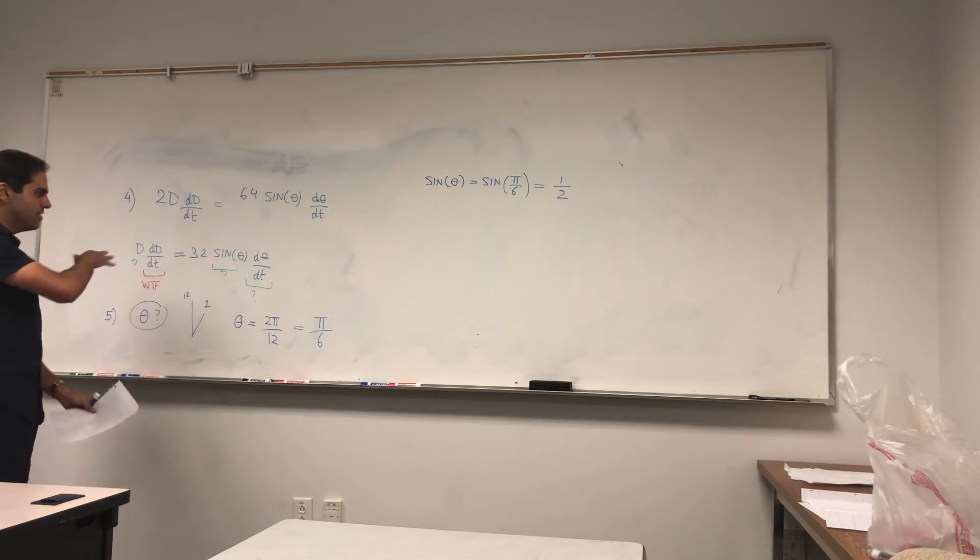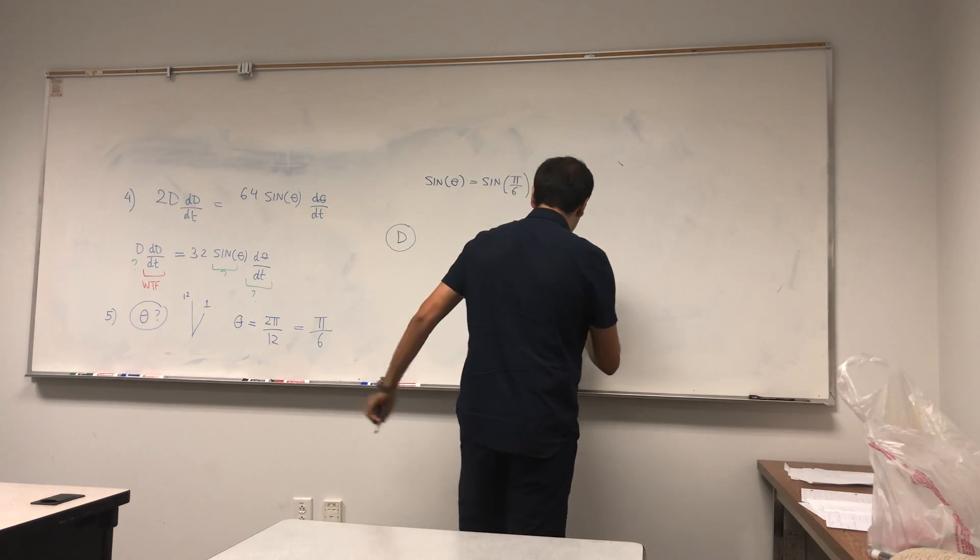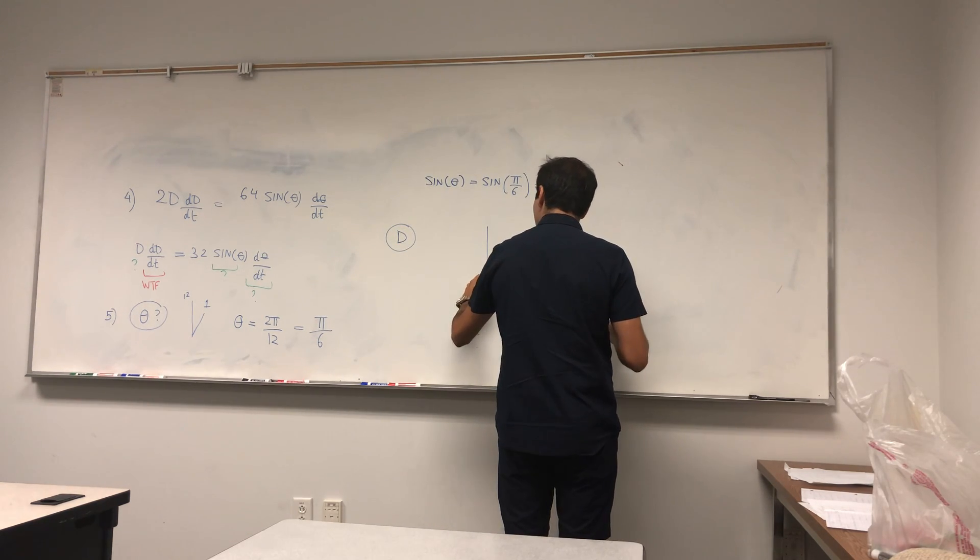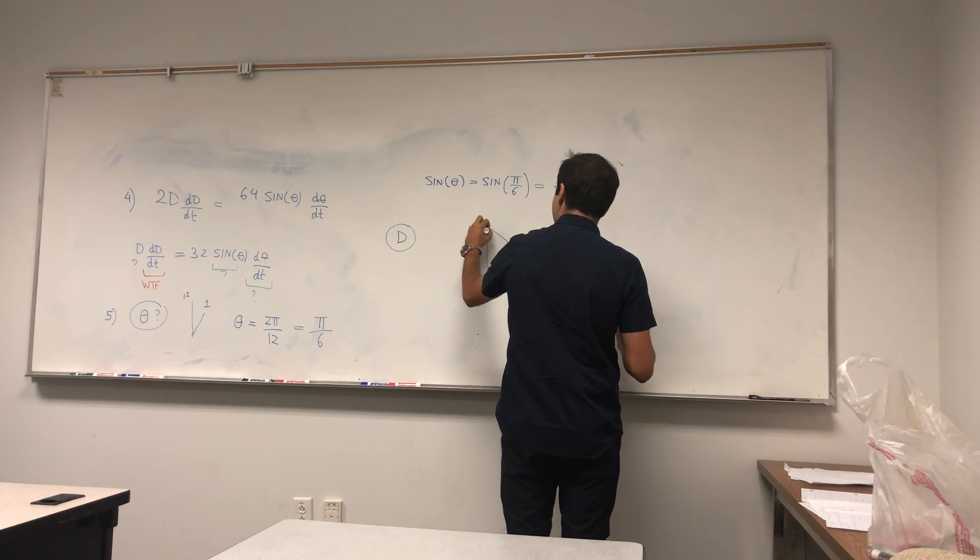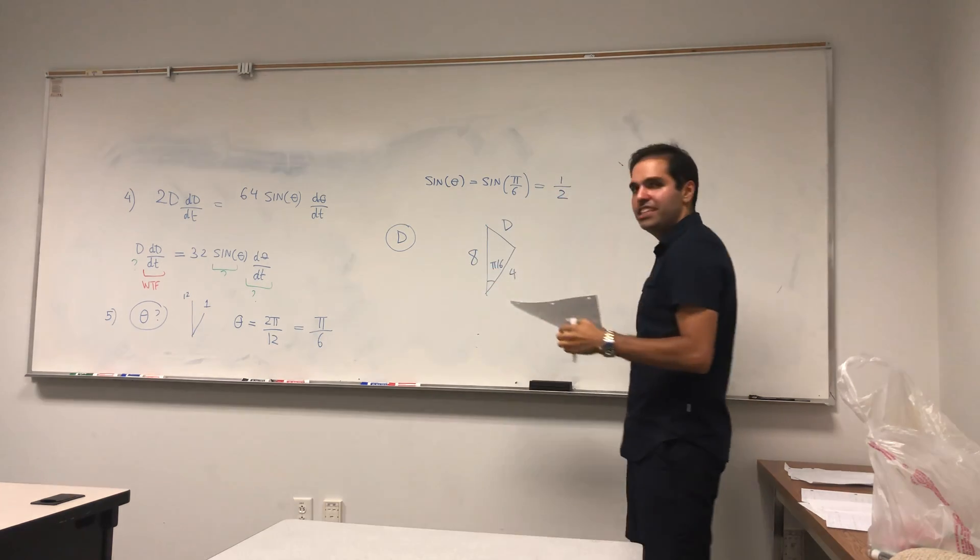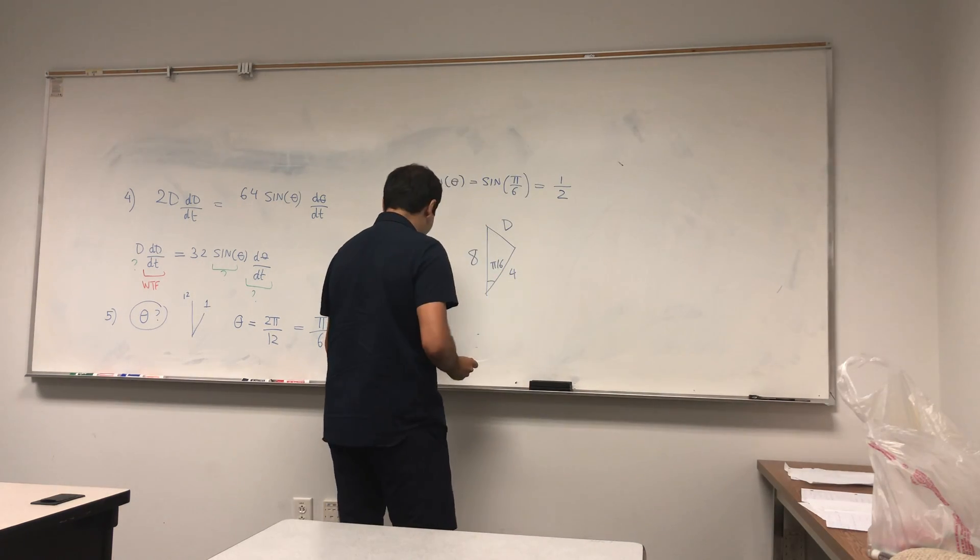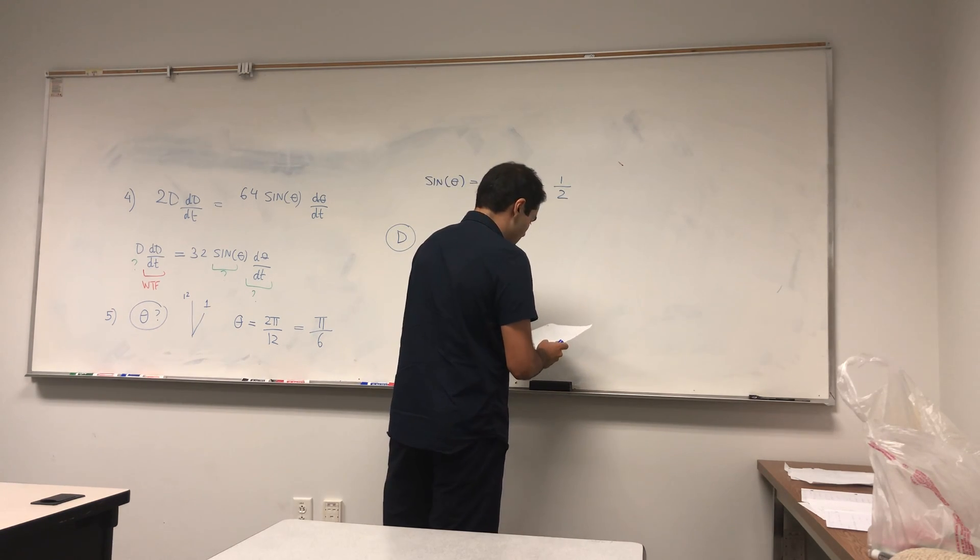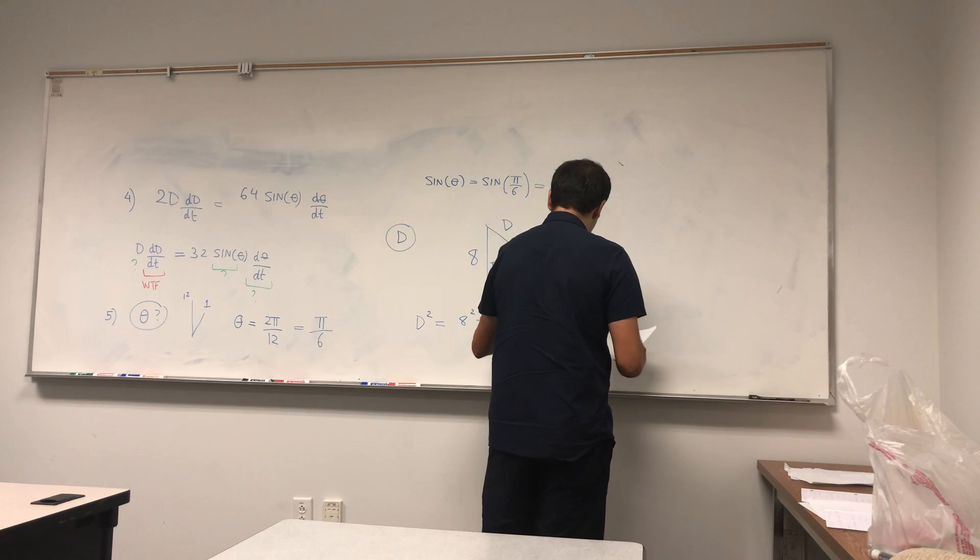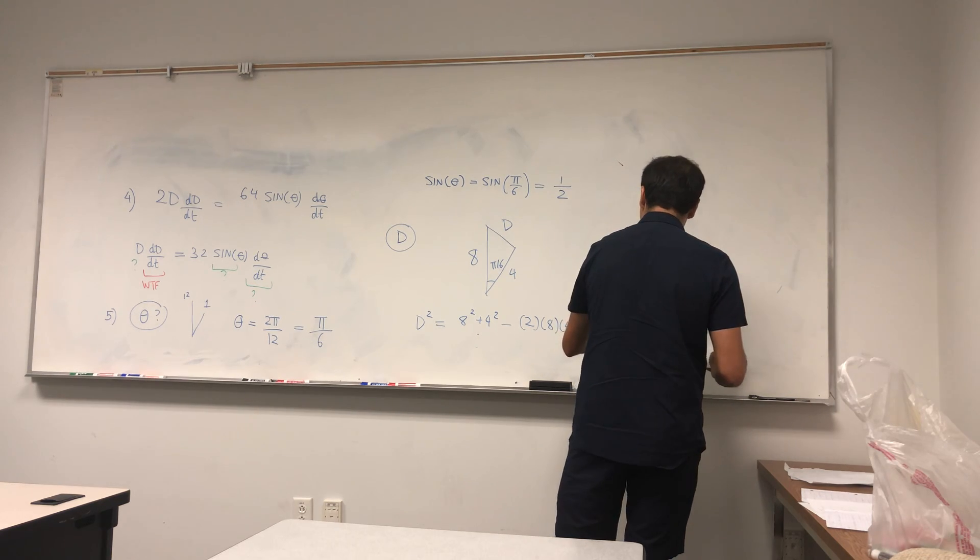So theta is pi over 6, and we'll actually need to use this to find D. And for this, as is usual for related rates, it's nice to redraw a picture. So we again have this minute hand and this hour hand, and we want to find D. And to find D, you actually use the same formula, so al-Kashi. So D squared equals again 8 squared plus 4 squared minus 2 times 8 times 4, but this time cosine of pi over 6.